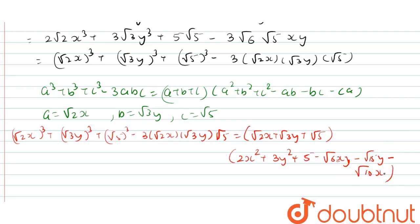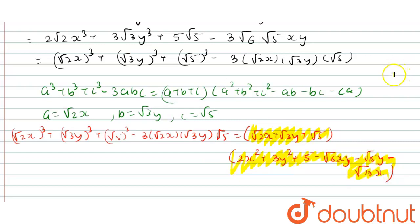So this is the final answer: (√2x + √3y + √5)(2x² + 3y² + 5 - √6xy - √15y - √10x). I hope that I have cleared your doubt and also cleared your concept. With this I am ending my video, thank you very much.